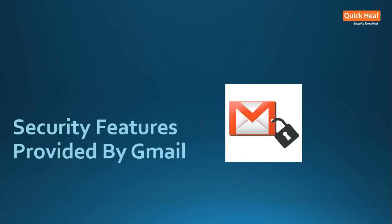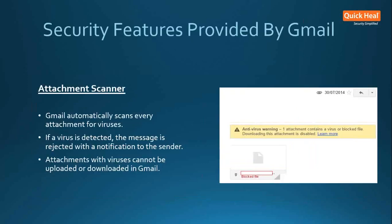Moving forward, what are the security features provided by Gmail? There is an attachment scanner that comes with every Gmail account — Gmail automatically scans all attachments for viruses. If a virus is detected on any attachment sent to your email, the message is rejected and the sender is notified. As a precautionary measure, you won't be able to download any files which contain a virus or malware recognized by Google. If an attachment you are trying to send is infected, Gmail will display an error message but it won't clean the file.